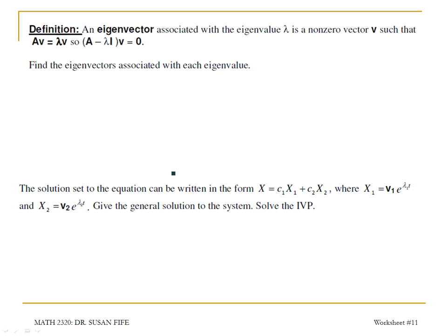We're going to use those eigenvalues along with eigenvectors to get solutions to the system. The eigenvalues are part of the solution — they appear in the exponent of the exponential term as lambda 1 t and lambda 2 t. The eigenvectors are v1 and v2, which are constant vectors multiplied by the exponentials. To get the eigenvector, we go back to A minus lambda I, and the eigenvector v satisfies A minus lambda I times v equals 0.